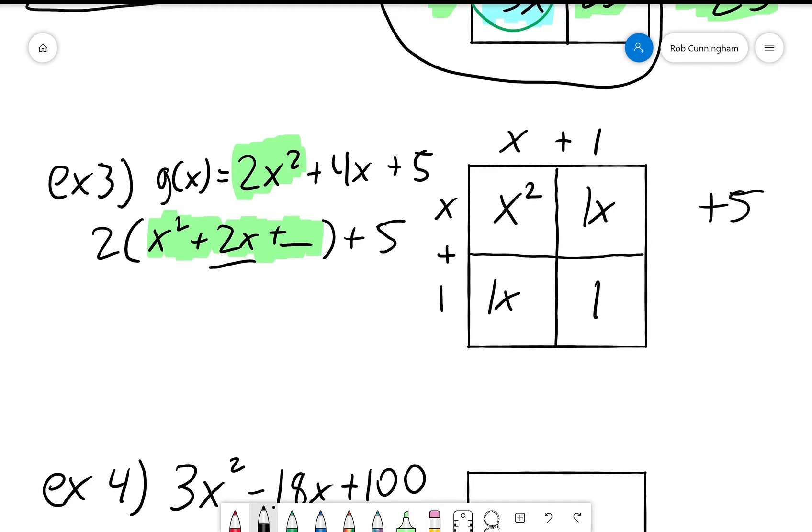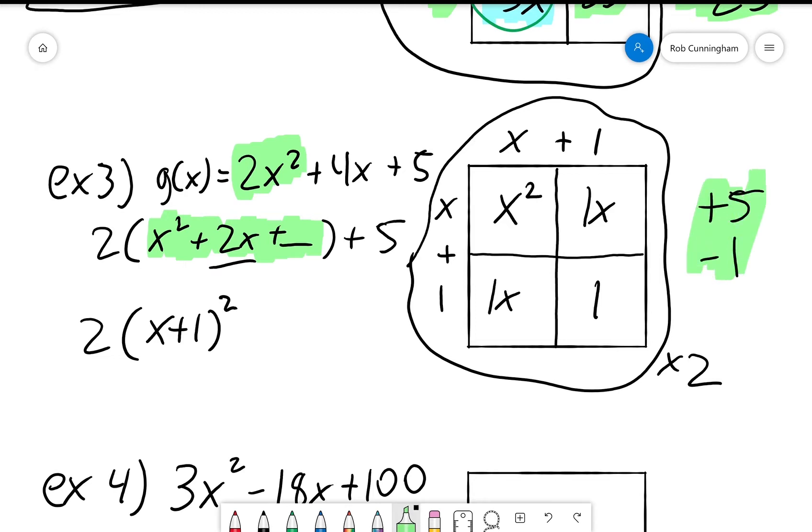If I add 1 on the inside, I have to subtract 1 on the outside. So my final answer is this square, except there's 2 of them. So 2 times x plus 1 squared plus 5 minus 1 plus 4.